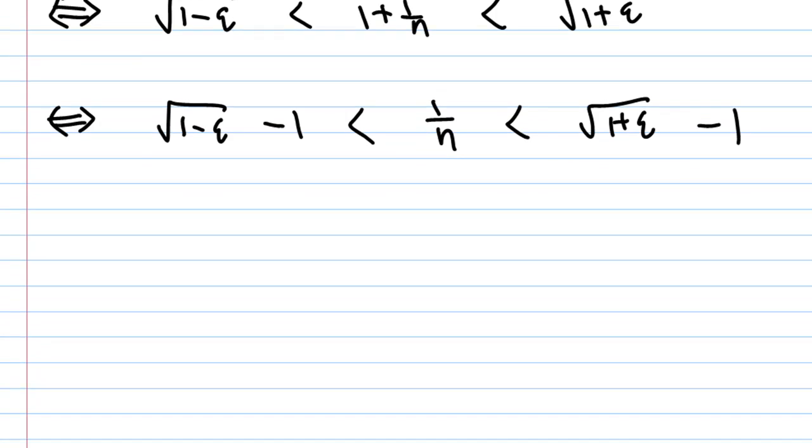Now, there are two inequalities here. Notice that √(1-ε) - 1 < 1/n is automatically satisfied for n = 1, 2, 3, 4, 5, so there is no concern for us. We only have to worry about the right-hand side.